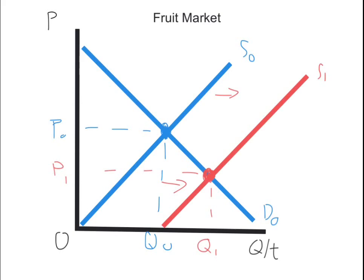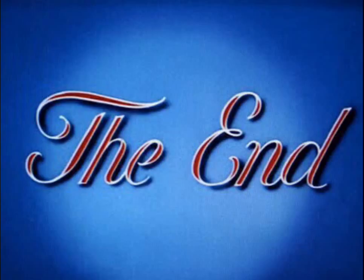Now for the fruit market — you can see the original blue line from the diagram. When the government provides a subsidy, the supply curve shifts right because the quantity of fruits increases. Due to the help of the government, the price goes down. So the government gets what they need, which is the health of citizens, and citizens get what they need as well.